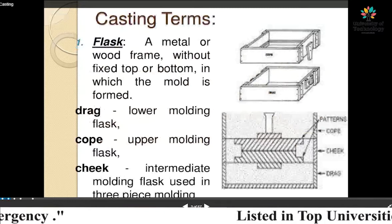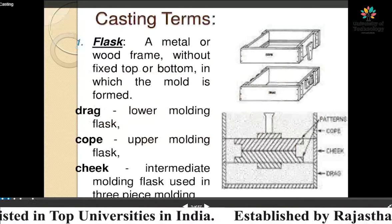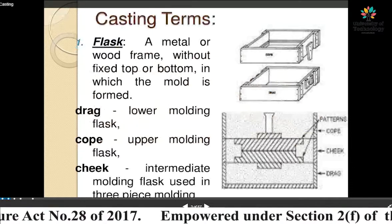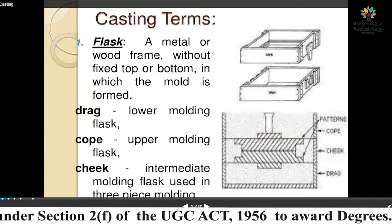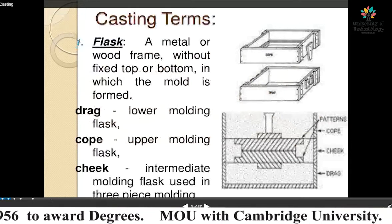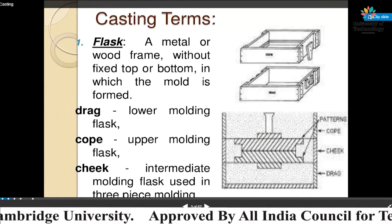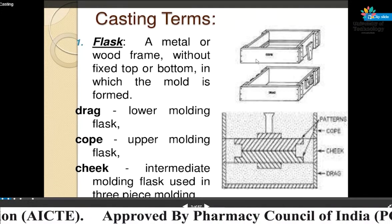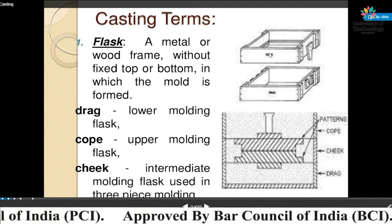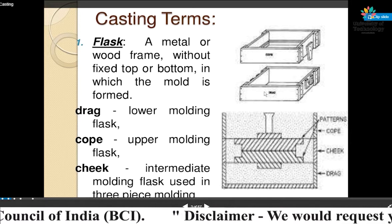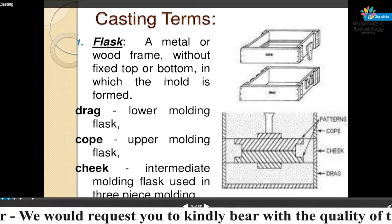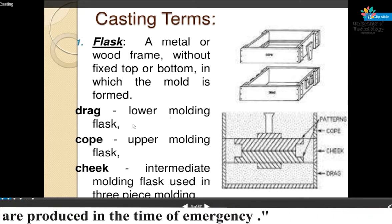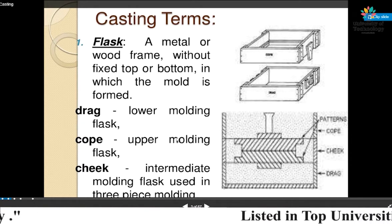The basic terms in casting include flask, cope, cheek, and others, which we will discuss with the figure in the slide. The first one is flask — the flask is a metal or wood frame without a fixed top or bottom in which the mold is formed. The upper part is known as cope and the bottom part is known as drag. The intermediate molding flask is called cheek, used in three-piece molds.